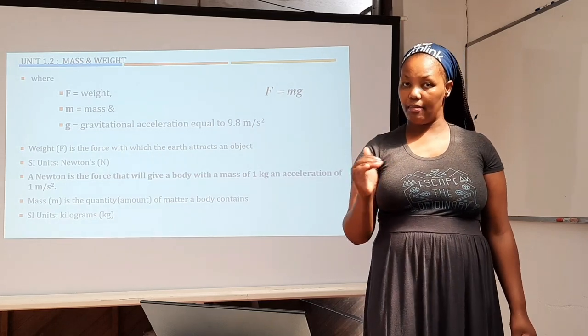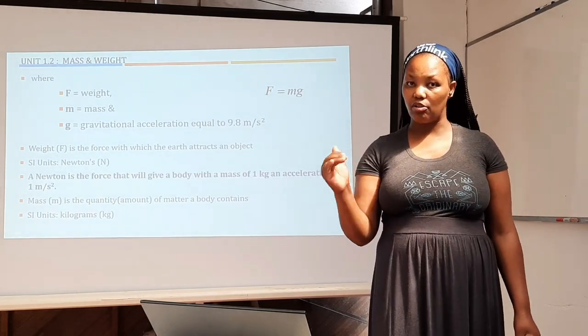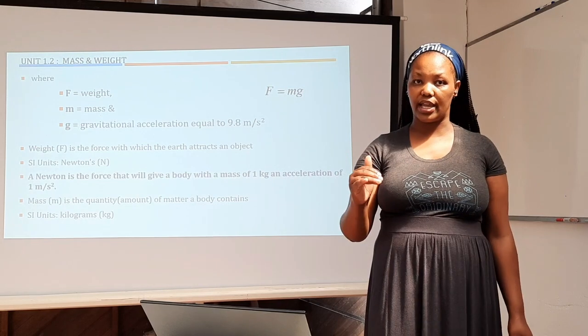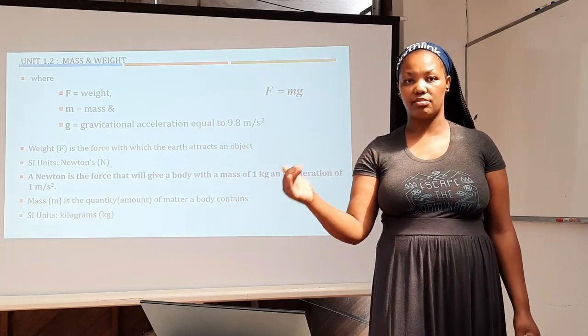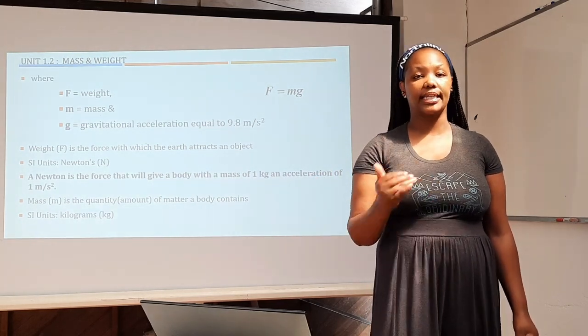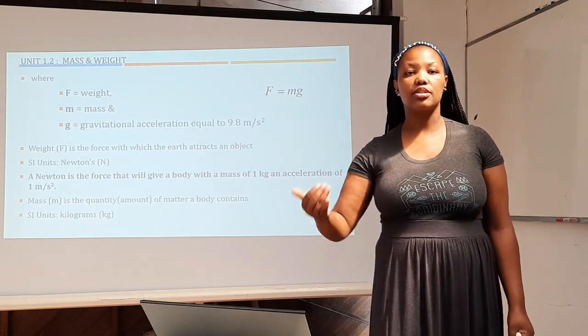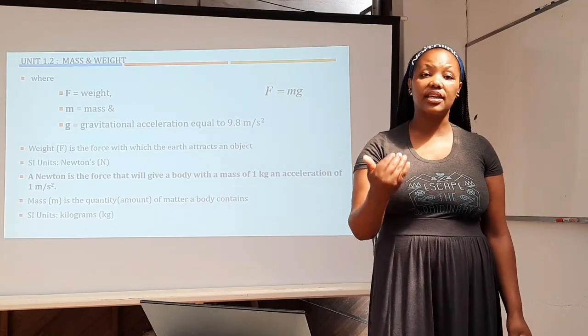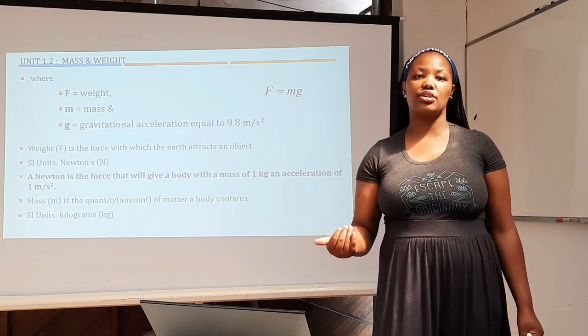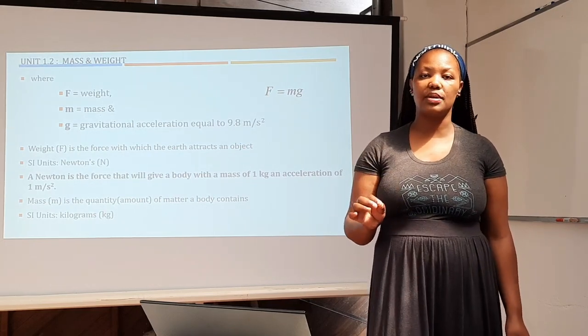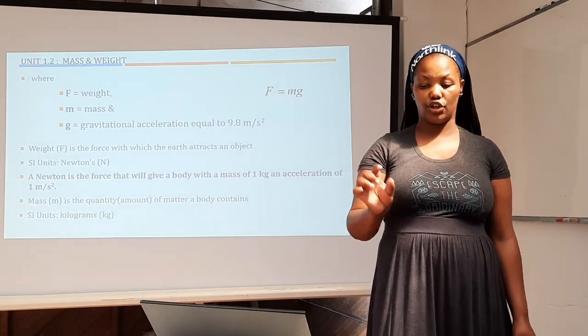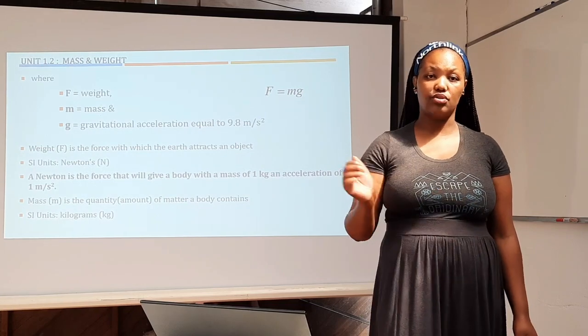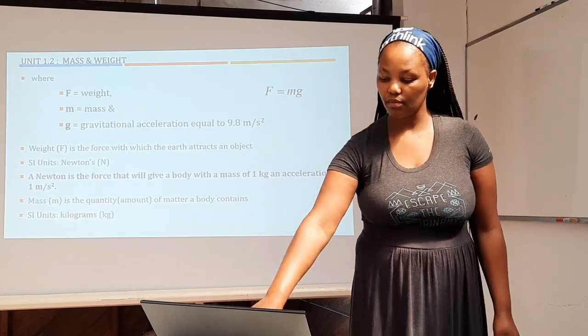So the kilogram of mass is not the same as the kilometer of length where you have to change the kilometer to meters. Mass must always be in kilograms. If they give it in megagrams, you change it to kilograms. If they give it in grams, you change it to kilograms. So the SI unit for mass is kilograms. You don't convert that kilo as you do for a kilometer.